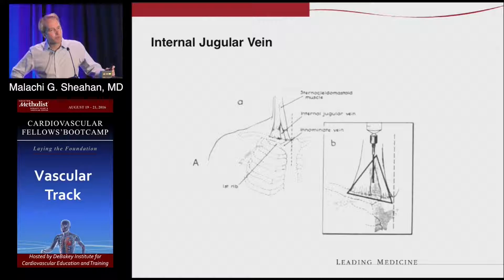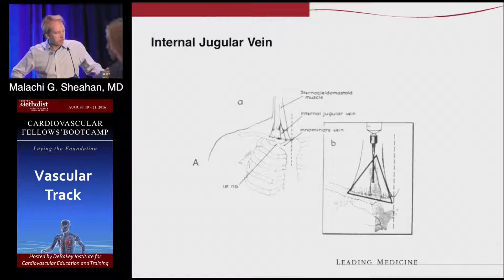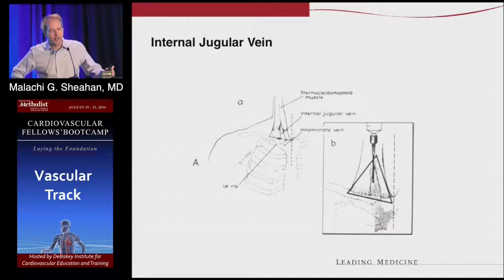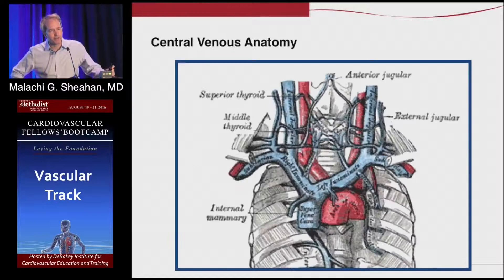We would access through the two bellies and usually the internal jugular vein is right behind there. You aim for the ipsilateral nipple — that's not a really trustworthy landmark, but that's what they taught us to do. There are a lot of complications, but now ultrasound is really the standard of care to find the internal jugular vein.